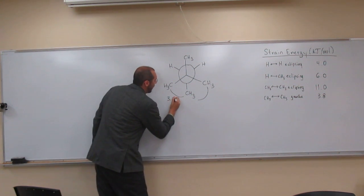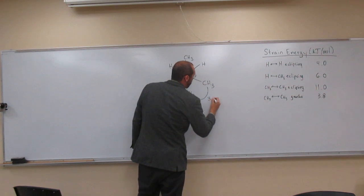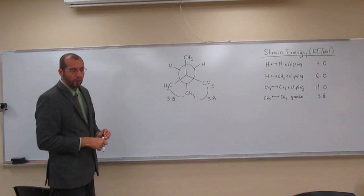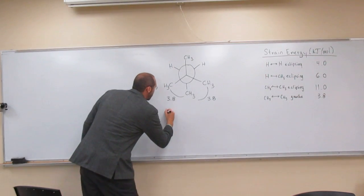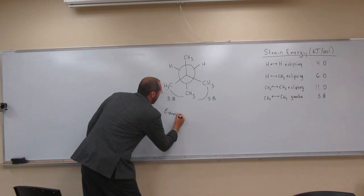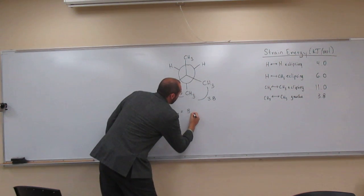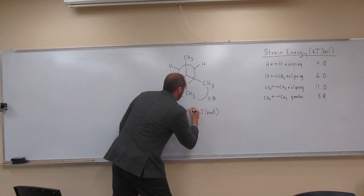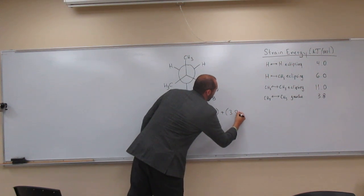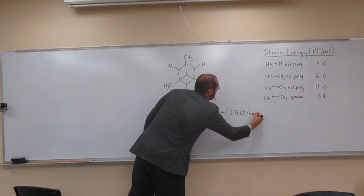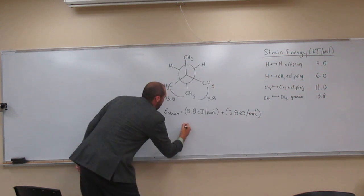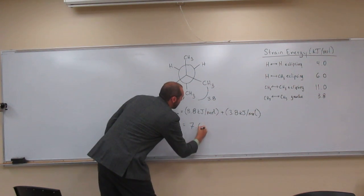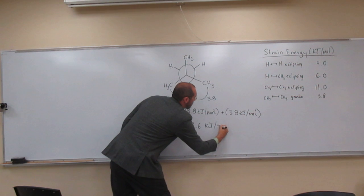So it's just 3.8 kilojoules per mole, 3.8 kilojoules per mole. And then the problem, of course, asks you to work it out. So the strain energy is going to be 3.8 kilojoules per mole plus 3.8 kilojoules per mole, or 2 times 3.8 kilojoules per mole. And that gives you 7.6 kilojoules per mole.